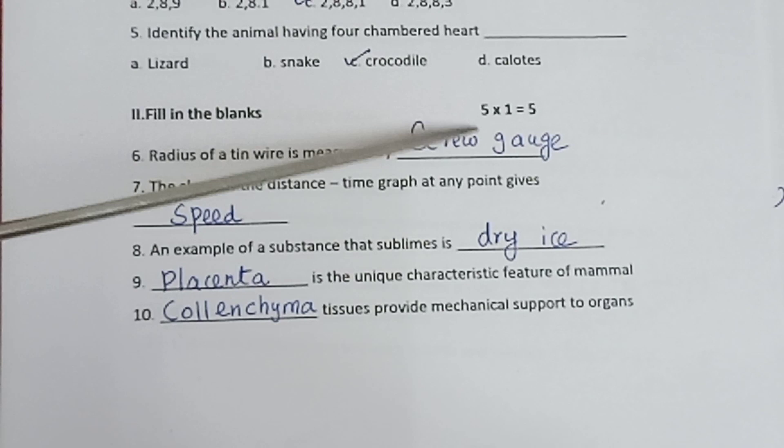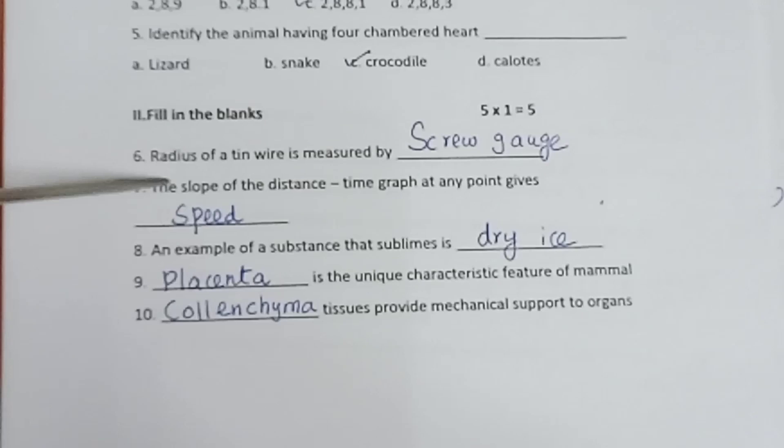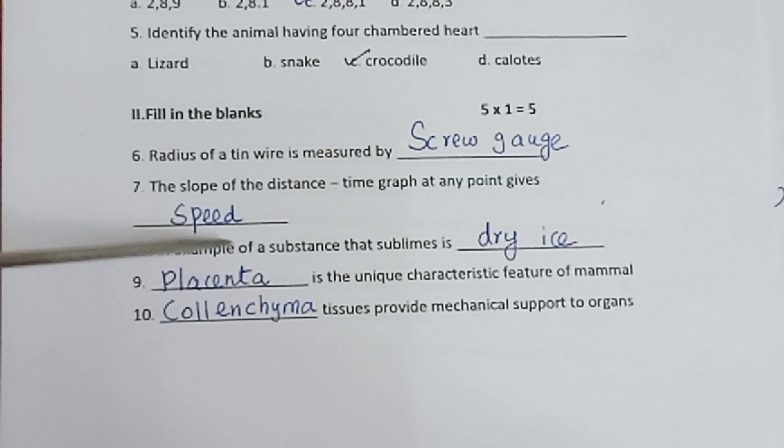Part 2: Fill in the blanks. 5 into 1 is equal to 5. Question 6: Radius of a thin wire is measured by screw gauge. Question 7: The slope of the distance time graph at any point gives speed.